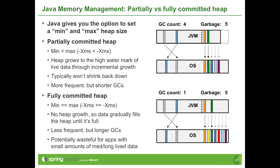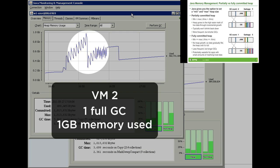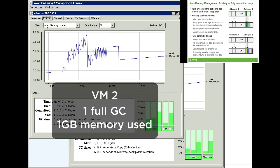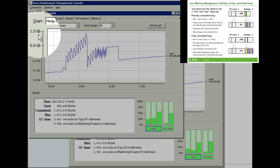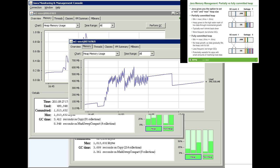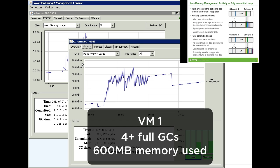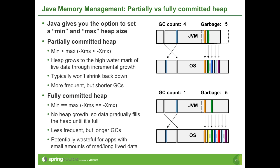The fully committed heap had only one garbage collection, but it paused the JVM for longer than the four collections in the partially committed case. Also, the live data that remains is more fragmented, which may mean the JVM needs to perform a compaction. Most importantly, the fully committed case has left a larger footprint on the operating system — it's consuming more memory, which it won't give back until it shuts down.